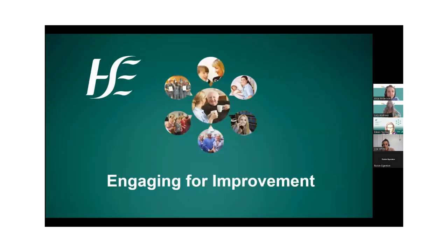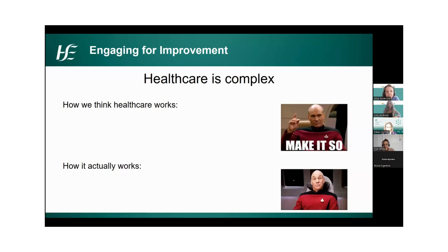Thank you so much Eileen, it's a pleasure to be here with you all today. I've turned my video off because it's a bit wild out here in the west in Galway, just in case there are network issues. I'm going to take you through a little bit of engaging for improvement. Healthcare, as we all know, is quite complex, and research indicates that staff engagement is the greatest indicator of all organizational performance. Staff engagement was defined as when staff feel valued, emotionally connected, fully involved, enthusiastic, and committed to providing a good service. Engagement is really important for quality improvement because unless we engage with teams and, as Eileen underscored, the service users, patients, and their families, you'll get nowhere - you can't do quality improvement on your own.